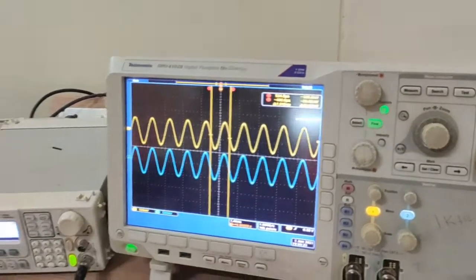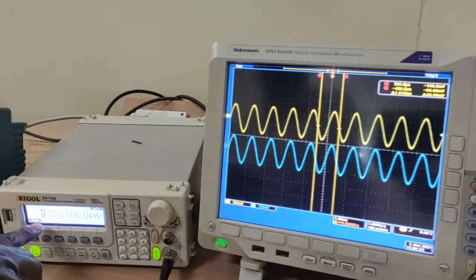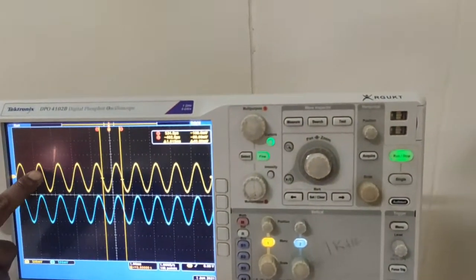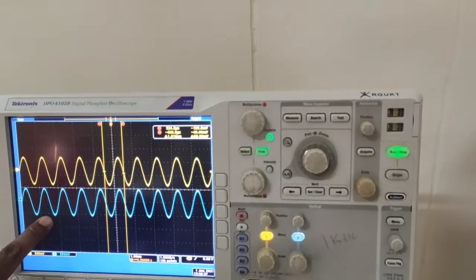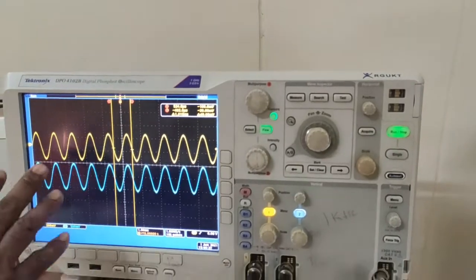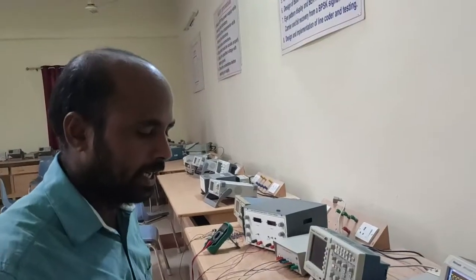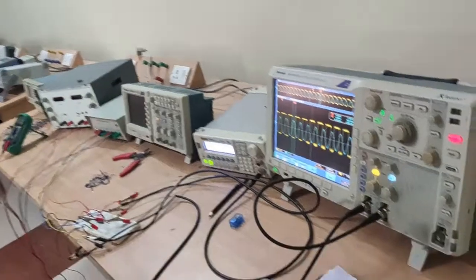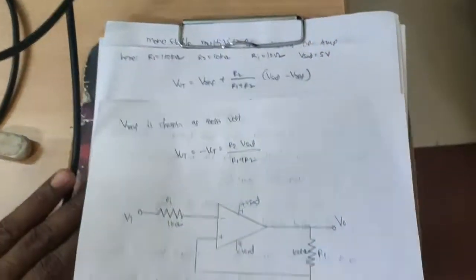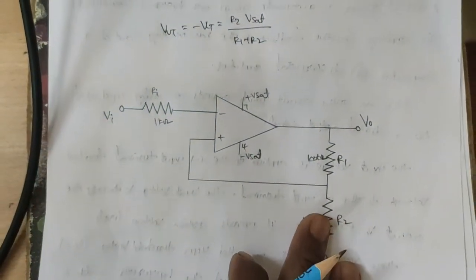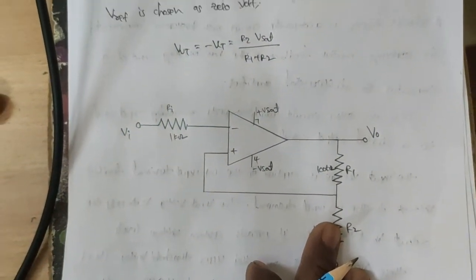The time period is approximately 1 millisecond, which corresponds to approximately 1 KHz. The frequency is also 1 KHz. The input and output are in the same phase and frequency. This is the Voltage Follower. Next, we discuss the Symmetric Trigger, and this is the circuit diagram for the Symmetric Trigger.